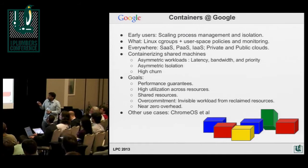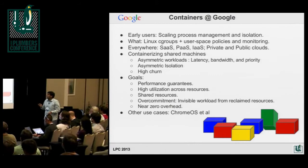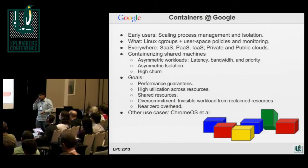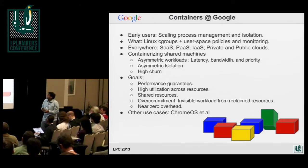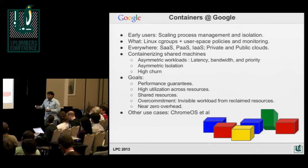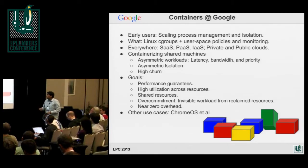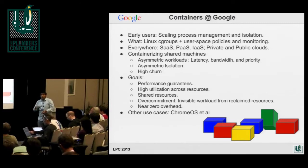We've been using cgroups fleet-wide since 2007. We progressively added more stuff on it, but we started with just CPU and memory, and now we do almost everything. It's everywhere — all our software and services run over it. Platform as a service, App Engine runs over it. GCE, our infrastructure service, runs over it. All our private and public stuff runs over it.